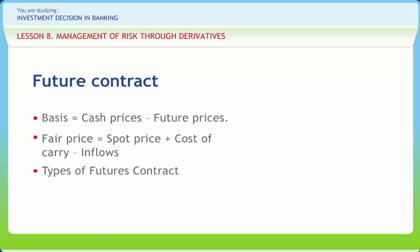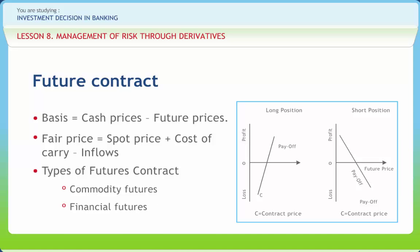This arbitrage between cash and futures markets will persist until prices in both markets align. Commodity futures have underlying physical assets such as wheat, cotton, butter, and eggs. Financial futures have underlying financial assets such as foreign exchange, interest rates, shares, treasury bills, or a stock index. The buyer of a futures contract has an obligation to purchase the underlying instrument at the agreed price when the spot price is above the contract price, while the seller makes a profit when the contract price is above the spot price.